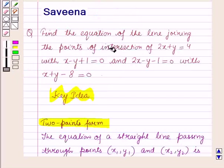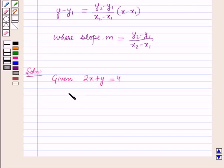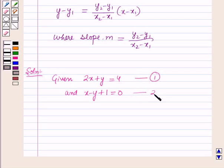Firstly, we have to find the point of intersection of the first two lines. Given the equations: 2x + y = 4, and x - y + 1 = 0. Let us name them as equation 1 and equation 2.